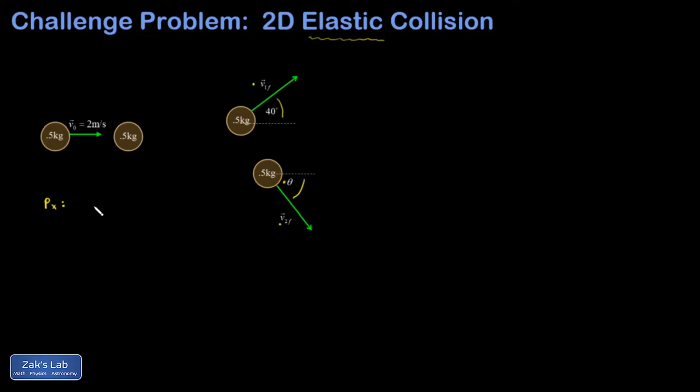I'm going to look at x momentum and write down an equation. In my initial state I have a mass of 0.5 kilograms moving at 2 meters per second, and in my final state I've got a mass of 0.5 kilograms moving at v1 cos 40 degrees and another mass of 0.5 kilograms moving at v2 cos of this unknown angle theta. All those masses cancel out, and I end up with my first equation: 2 equals v1 cos 40 plus v2 cos theta.